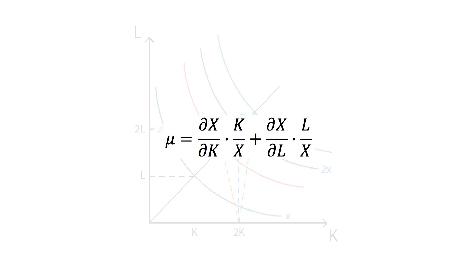We can measure the elasticity of these returns to scale, noted as mu, which is equal to the sum of the partial derivatives of production with regards to each factor multiplied by the proportion each input makes up of the whole.